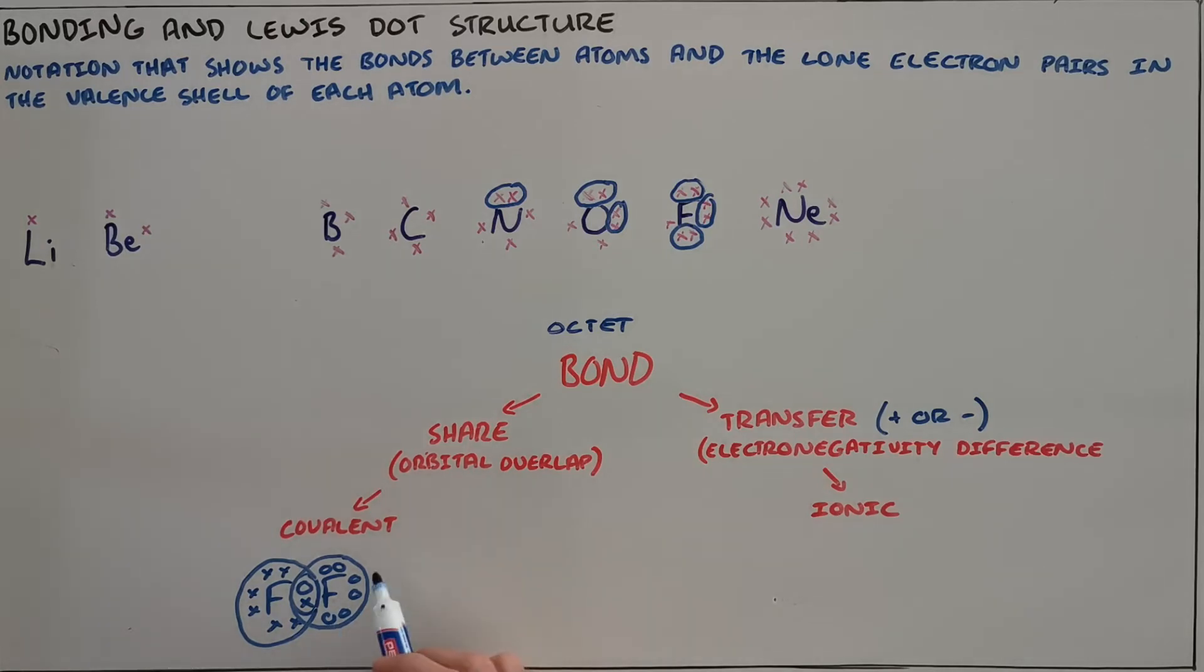The converse of this is the bond that would form between something like lithium, which as we can see has only one valence electron, and fluorine, which has seven valence electrons. Because fluorine has such a high electronegativity, or has a far greater electronegativity than lithium, that electron would be taken from lithium towards fluorine.